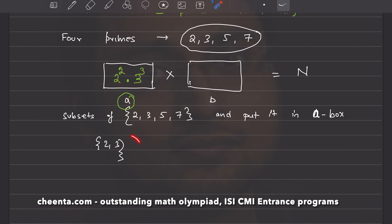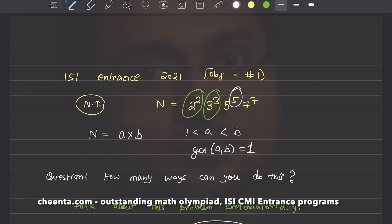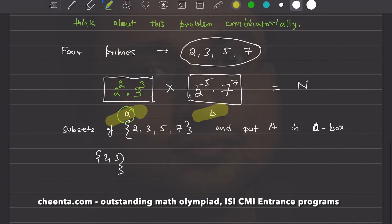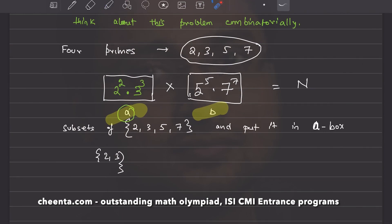Every time I create a subset, I am building a, and I'm indirectly building b, because I'll put everything else inside b. For example, in this particular case, I would put five and seven inside b. In fact, I will put all the fives and all the sevens. So, five raised to five, seven raised to seven. So, I have built a and b, the two numbers whose product is n and whose GCD is one.